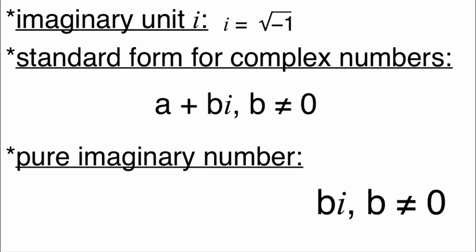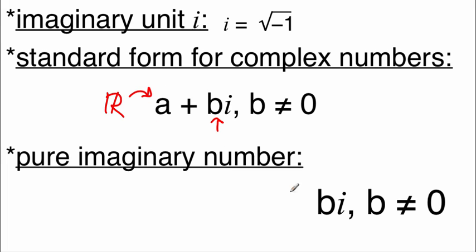Before we get too far into things, I should define what i is. i is something we're going to use to represent the square root of negative one. Normally we're not allowed to do square roots of negative numbers, but once we introduce this i value, it'll let us do a bunch of different things mathematically. The standard form for a complex number looks like a plus bi, and we have to make sure that b isn't zero, otherwise the imaginary piece goes away. The a value represents a real number, and if we just have the bi piece, we call that a pure imaginary number.